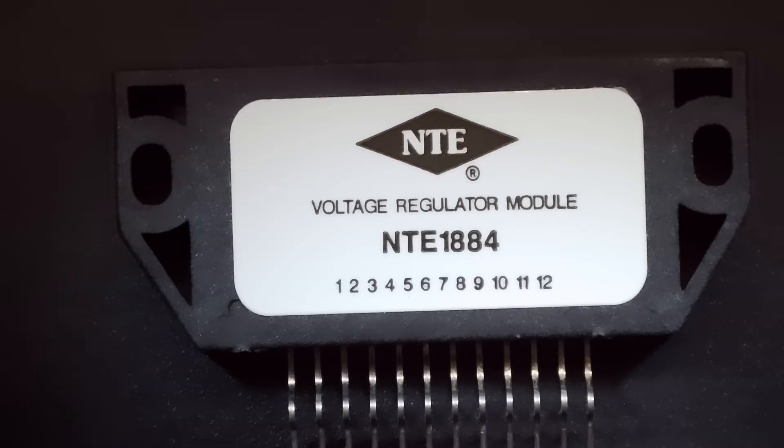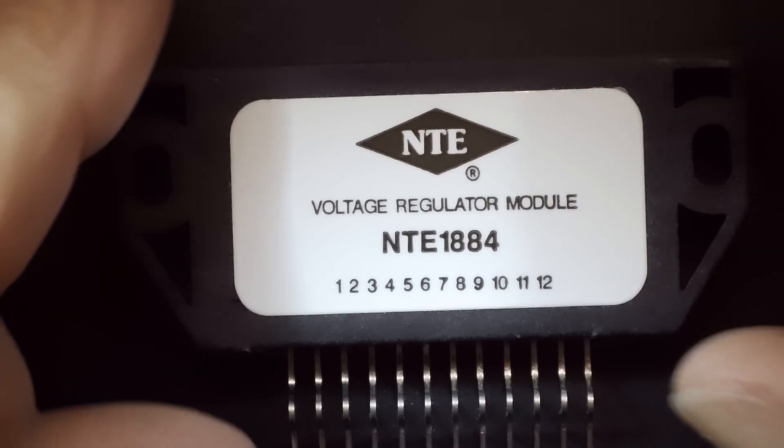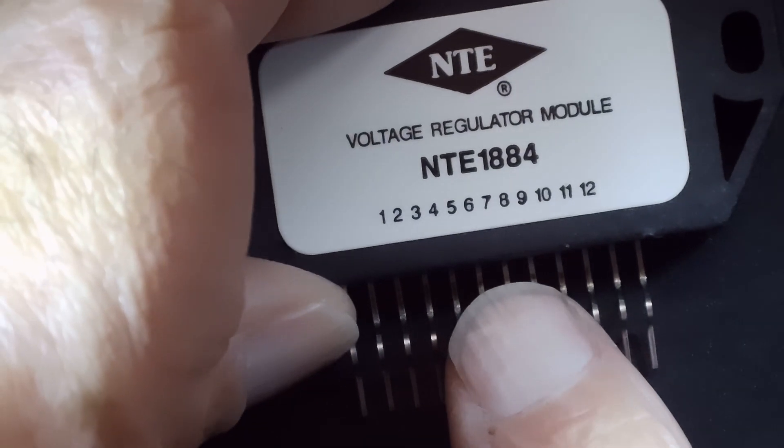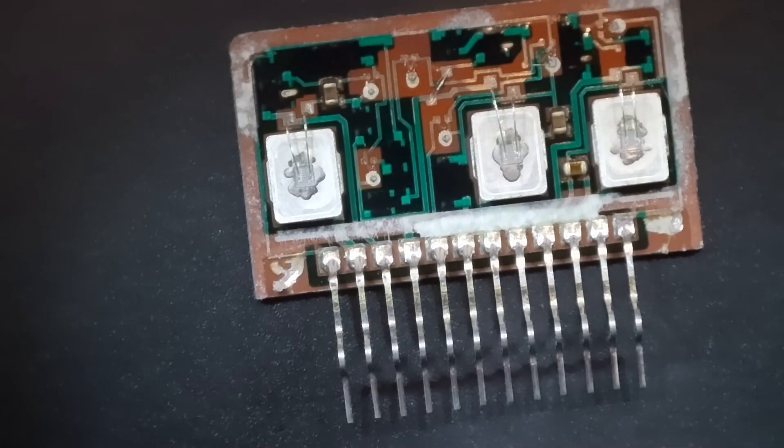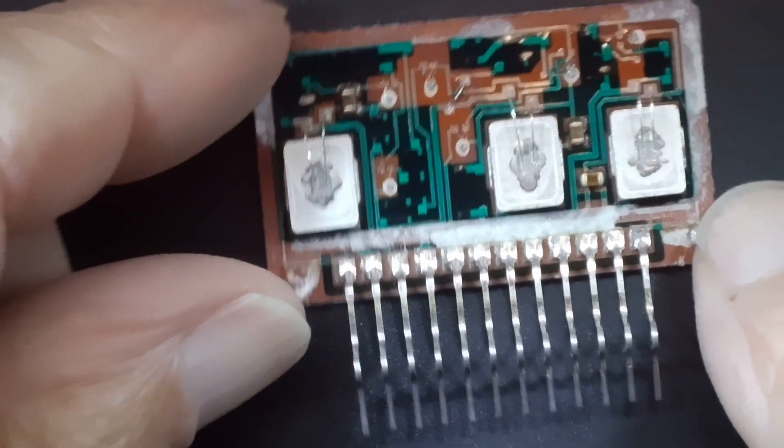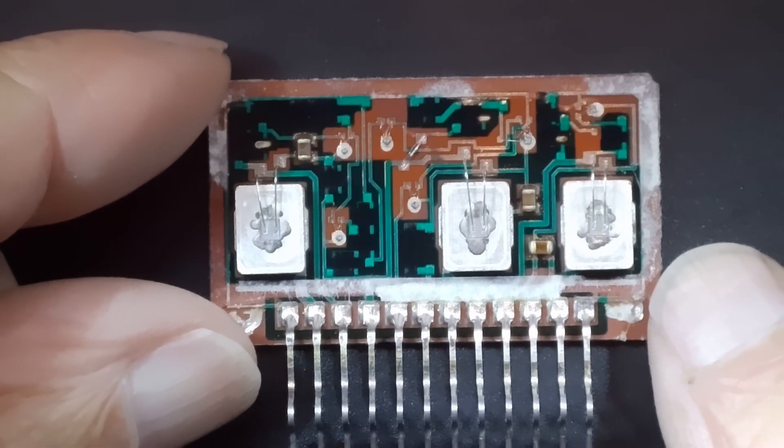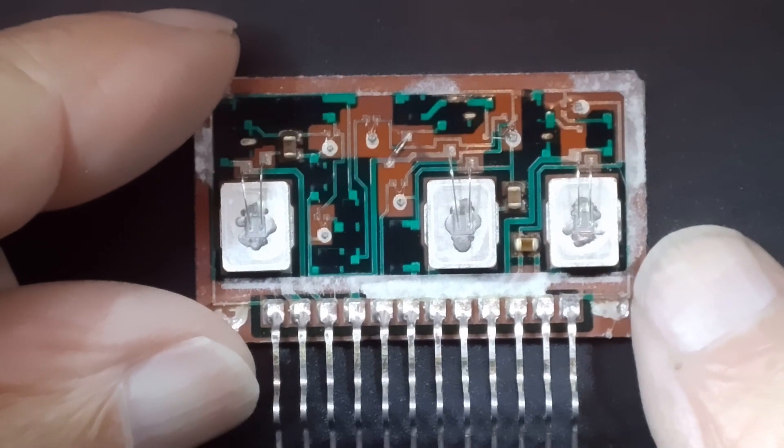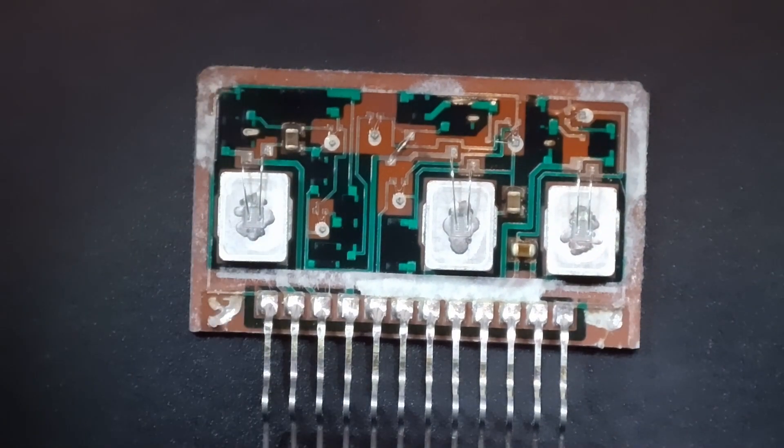Alright, here is the NTE 1884. I conveniently already cracked the seal on it, so let's pull it apart here. You can see there are three big pass transistors, so it's obviously triple voltage and not a lot going on.